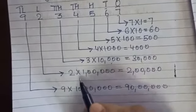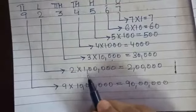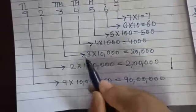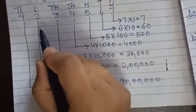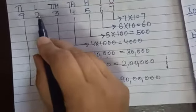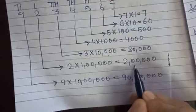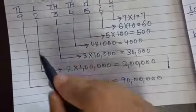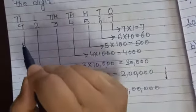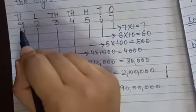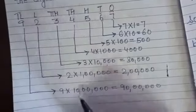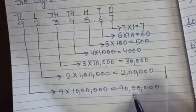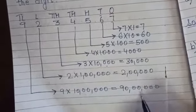Next is 2: 2 multiplied by 1,00,000 equals 2,00,000. Next is 9: its place value is 10,00,000, so 9 multiplied by 10,00,000 equals 90,00,000.